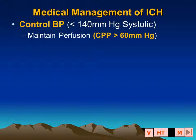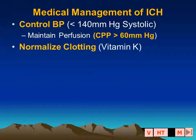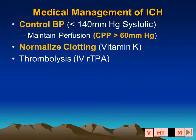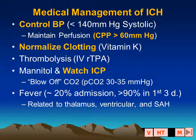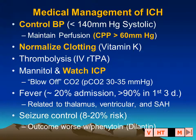The medical management of intracerebral hemorrhage includes controlling blood pressure while maintaining a cerebral perfusion pressure greater than 60 mmHg. If the patient has a coagulopathy, we normalize clotting factors; if on Coumadin, we can administer vitamin K. Intravenous thrombolysis has been used. Mannitol is very commonly given acutely. We may reduce intracranial pressure by reducing PCO2 via hyperventilation. Up to 90% of patients with intracerebral hemorrhage will have a fever during the first three days, thought to be related to thalamic or third ventricular involvement or extension of blood into the subarachnoid space.